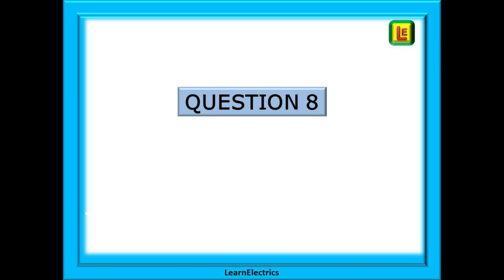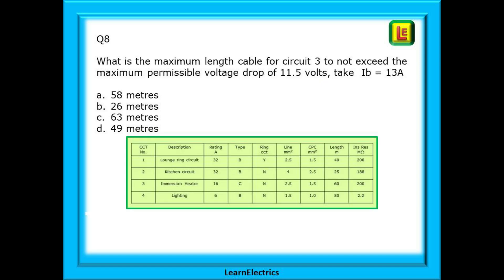Finally question 8. The question is what is the maximum length of cable for circuit number three to not exceed the maximum permissible voltage drop of 11.5 volts and we are told to take IB as 13 amps. Pause the video and attempt the question.